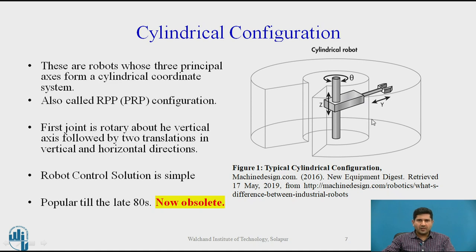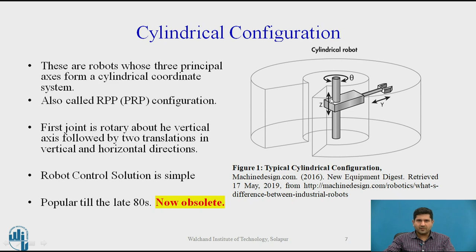The cylindrical configuration is often labeled as RPP — the first axis is revolute, then two prismatic or linear axes. Some authors call it PRP, that is prismatic, revolute, and prismatic. There's a slight difference among authors: some take the prismatic joint first, then revolute, then prismatic; others use RPP. The first joint is rotary about the vertical axis, followed by two translations in horizontal and vertical directions.